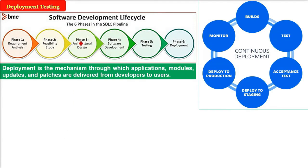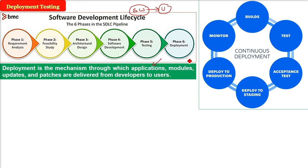Deployment testing. Whenever we are done with the software, we have made the software as a software developer. Deployment is now we have to give it to the user. So deployment is the mechanism through which applications, modules, updates and patches are delivered from the company who has developed it to the company or to the individuals or to the stakeholders for whom it was being developed.